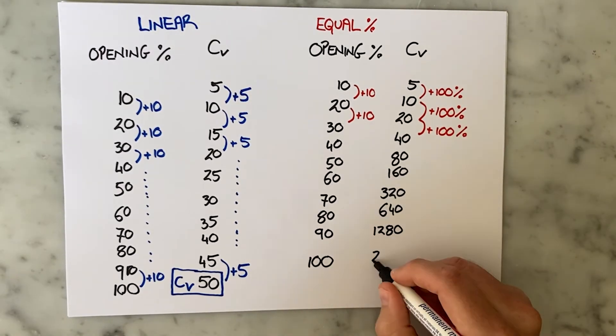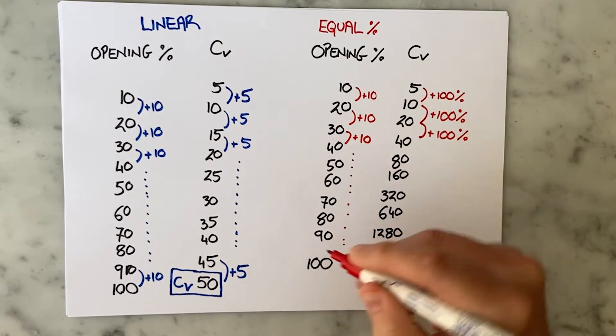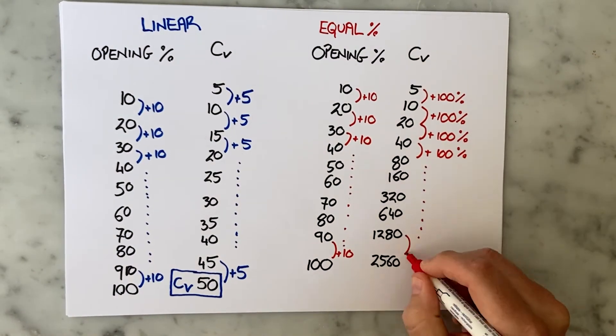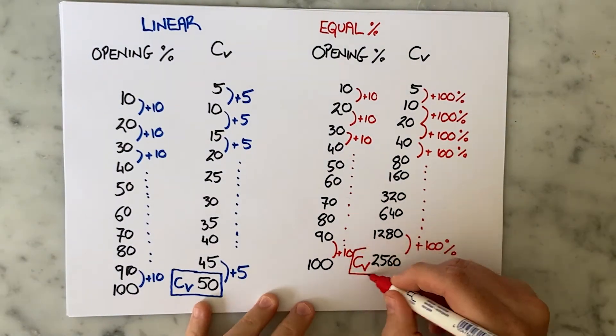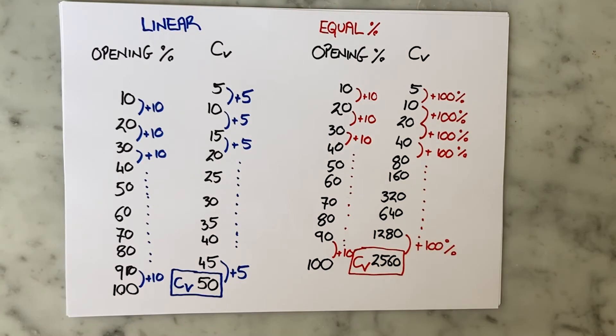If I carry on like this I will get to a valve CV at 100% opening of 2560. If you're thinking wow this is growing exponentially, then you are correct in the technical sense. This is an exponential curve. So this is a really big valve.